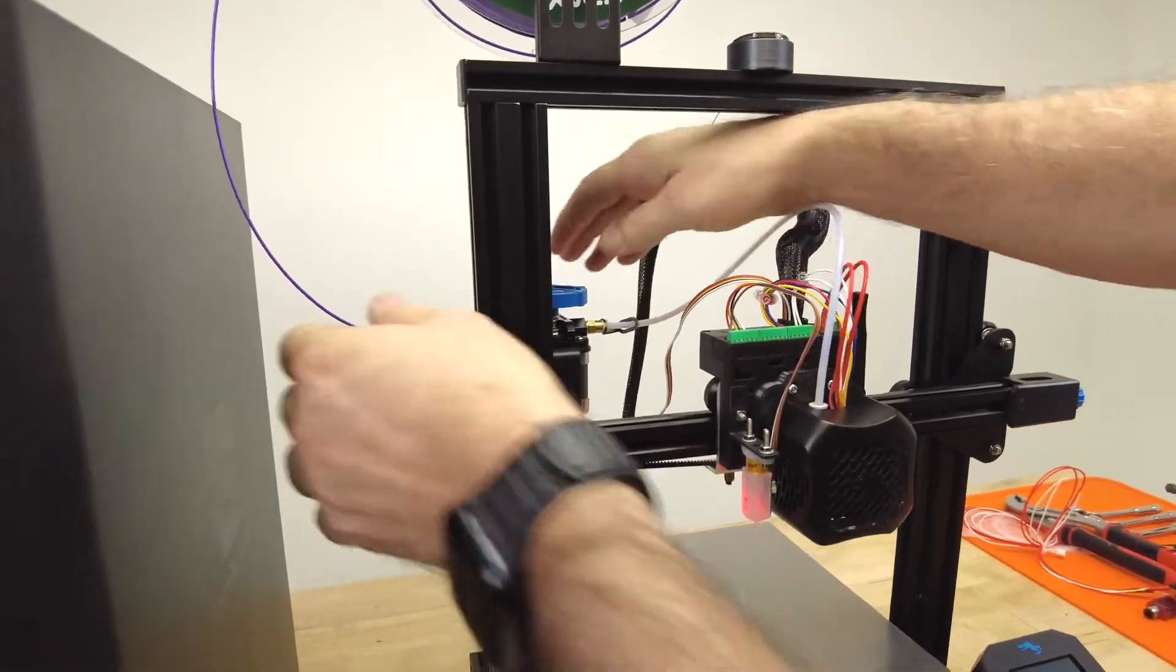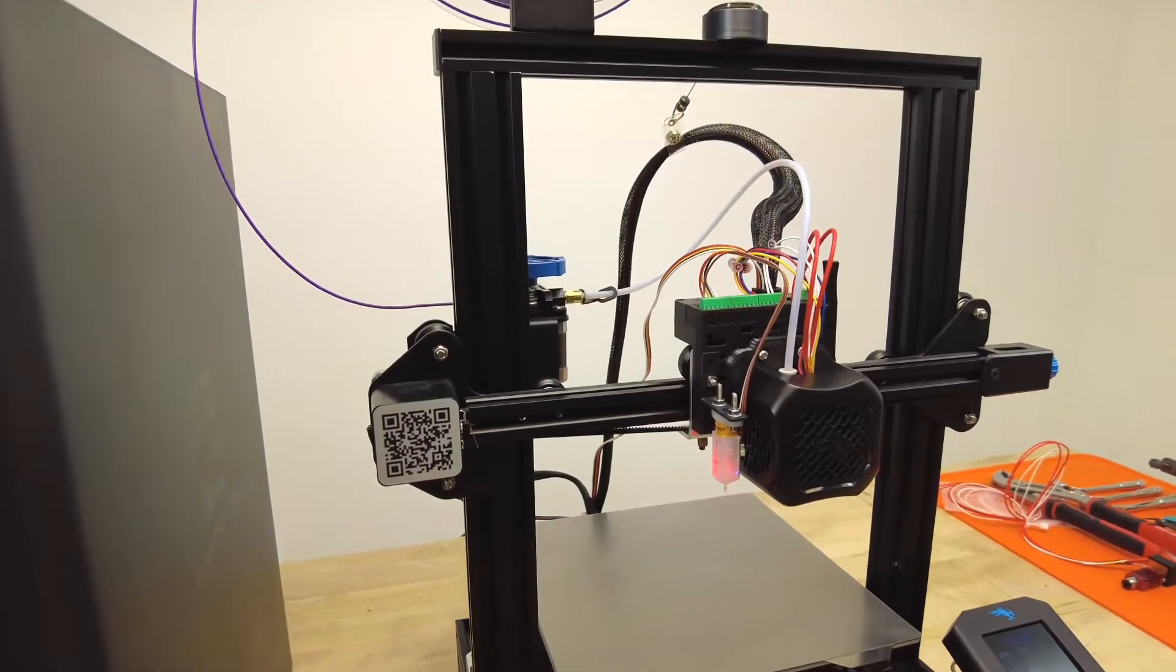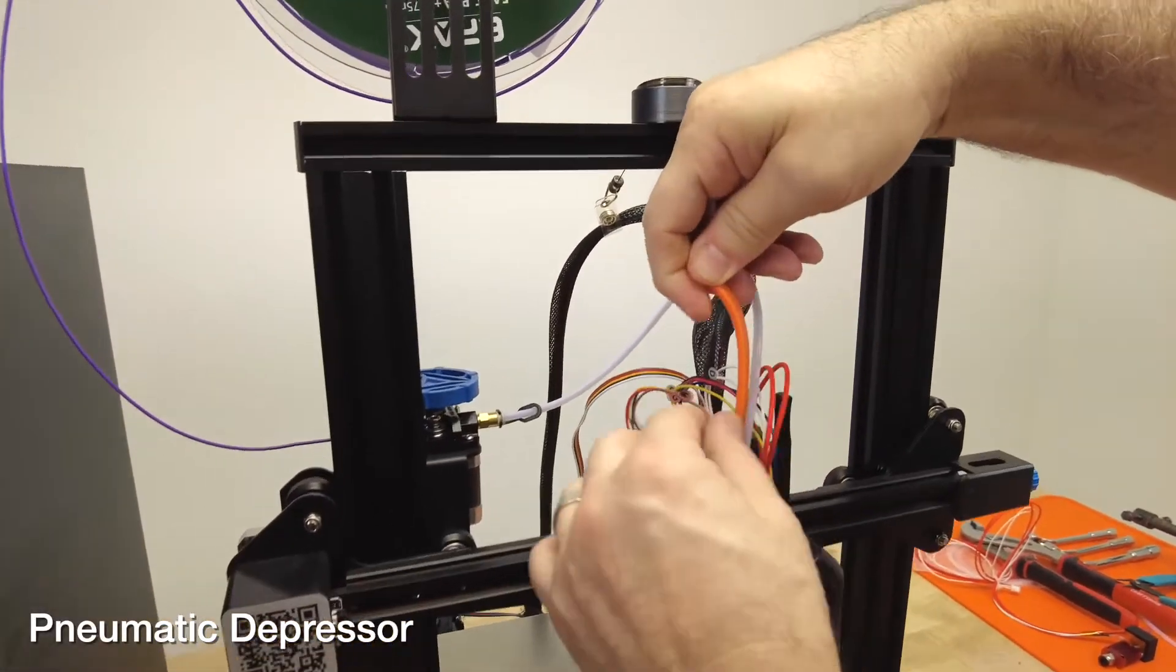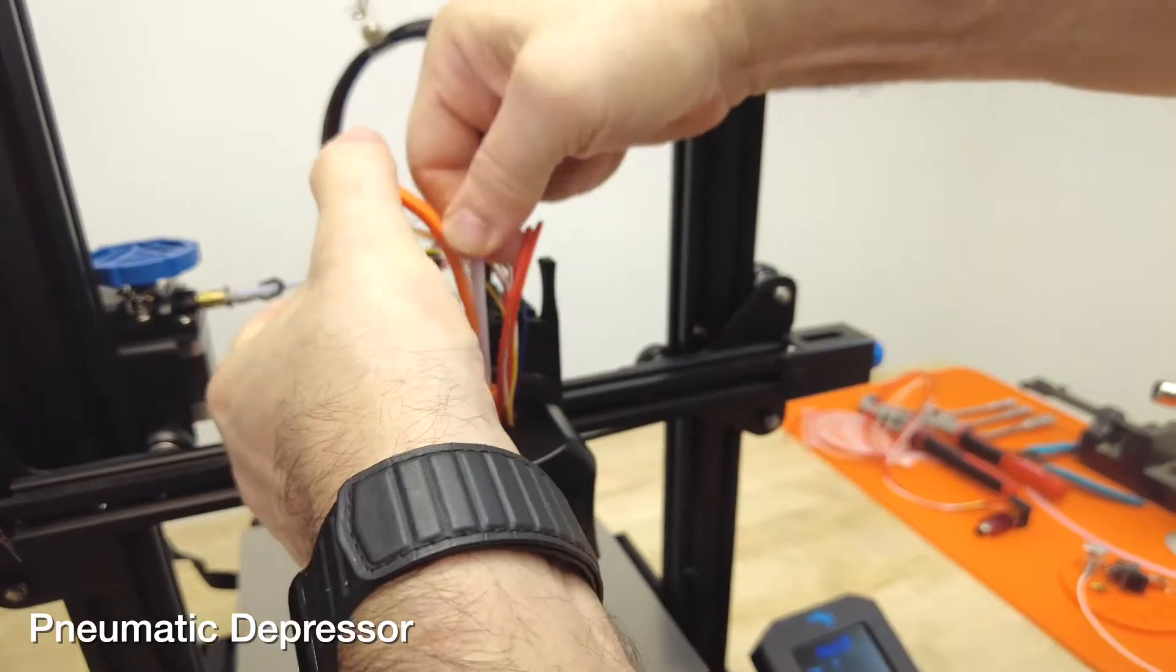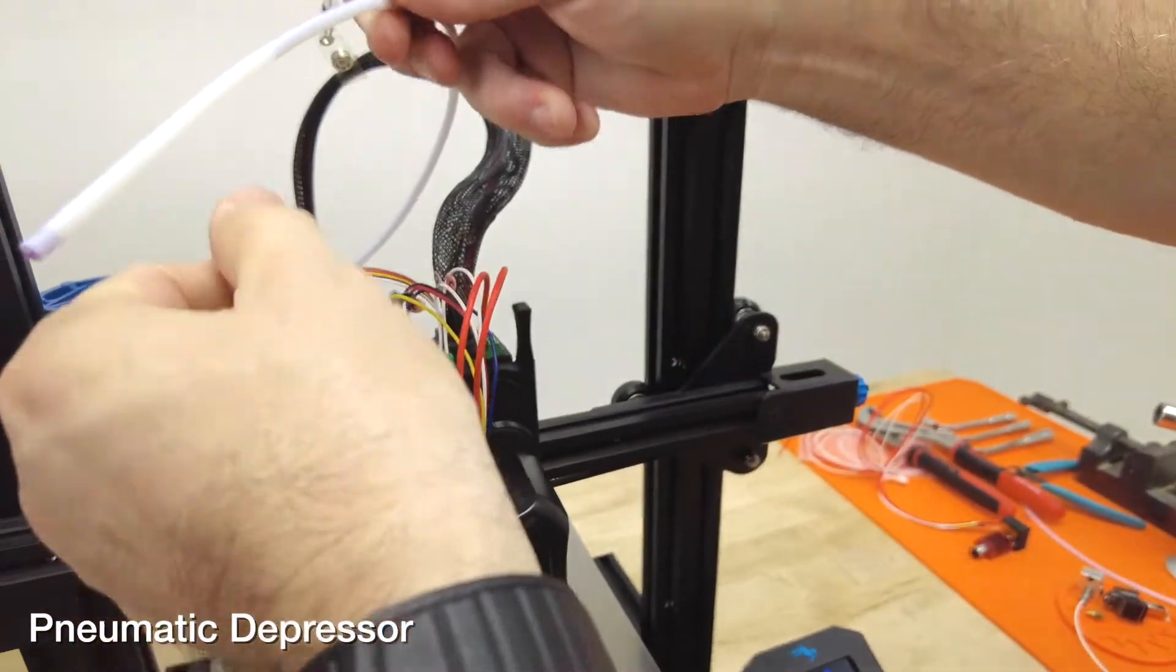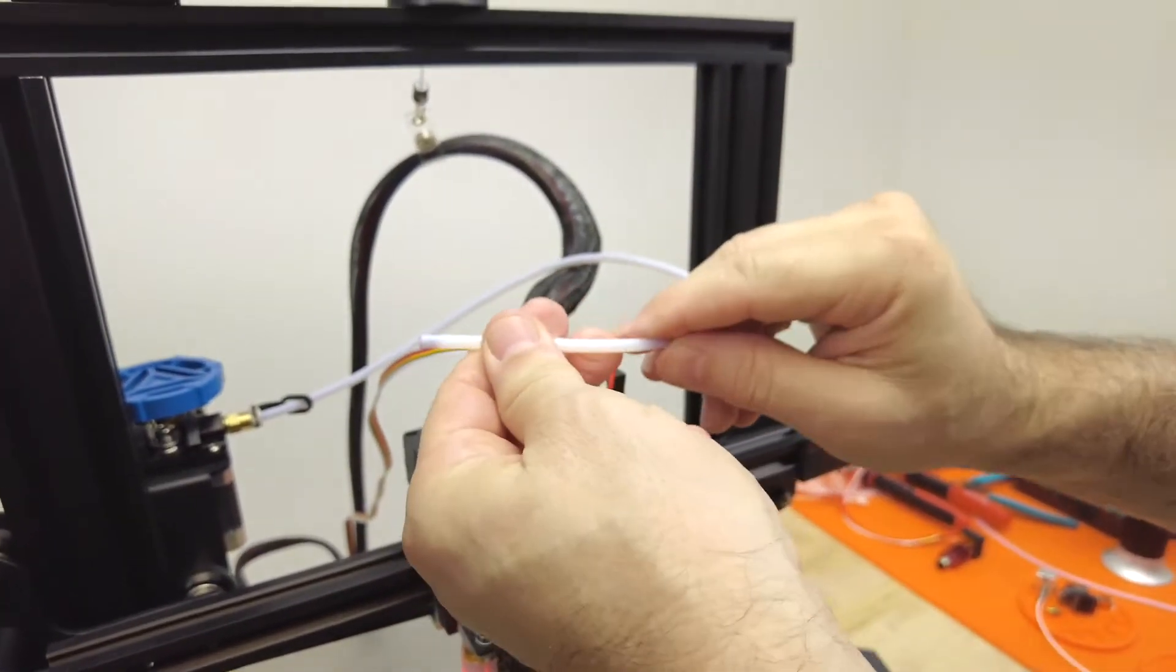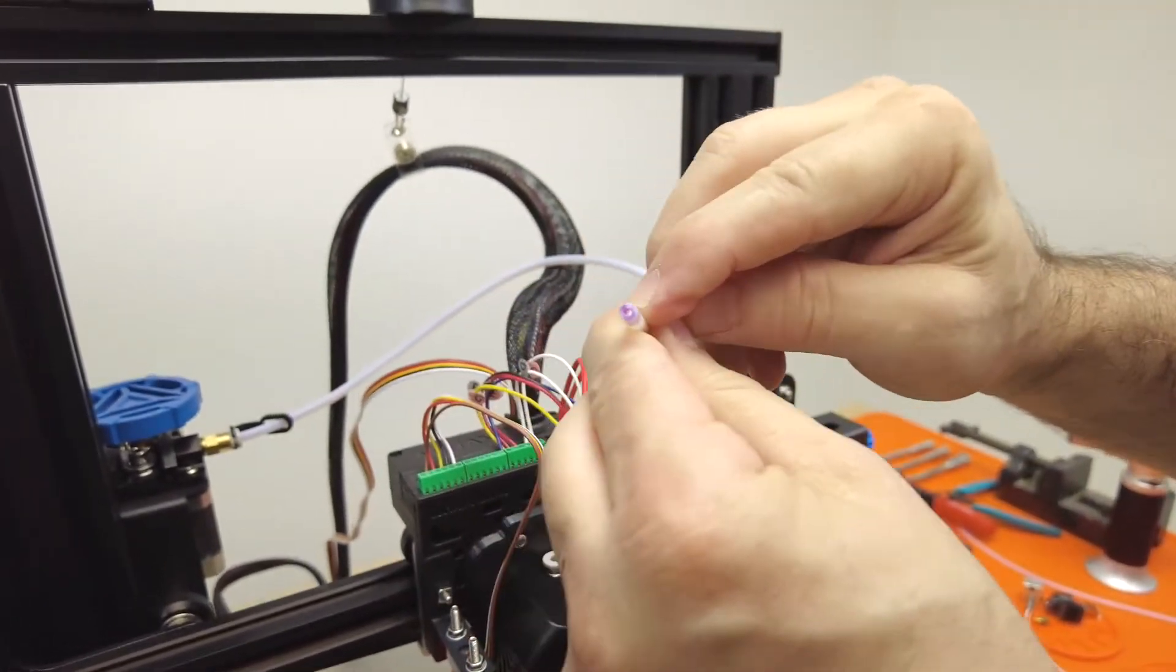I can get the filament out, which is good. And then we're going to use the pneumatic depressor to push down and pull out the Bowden tube. Once the Bowden tube's out, you want to make sure that that's clean. This obviously is one of the roots of our jam.